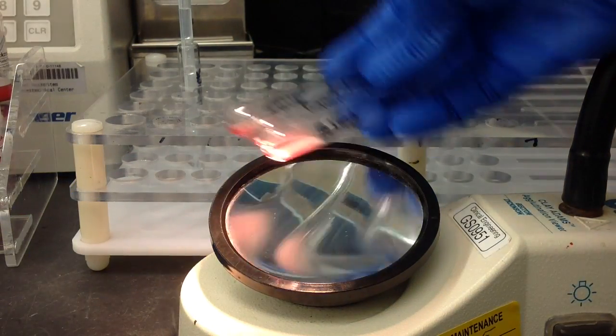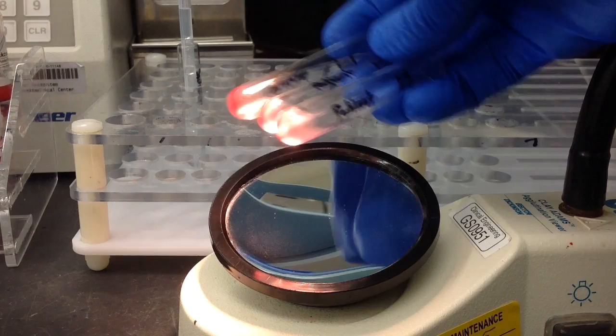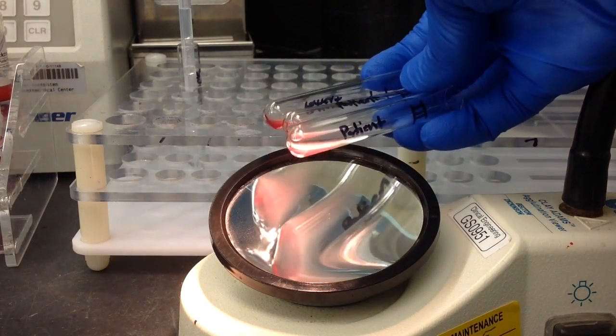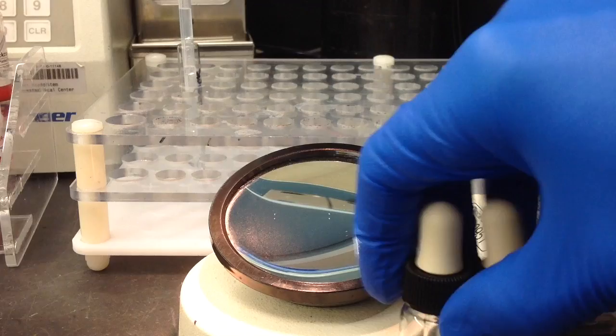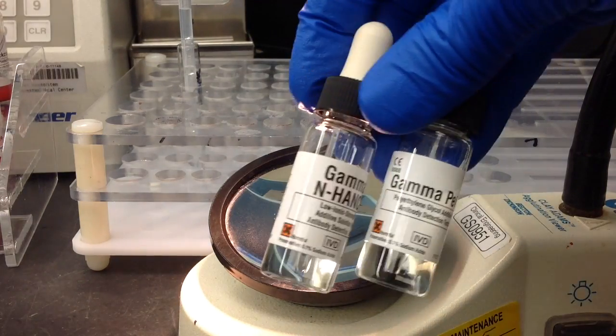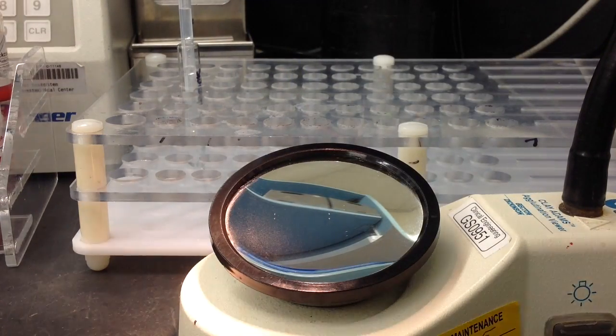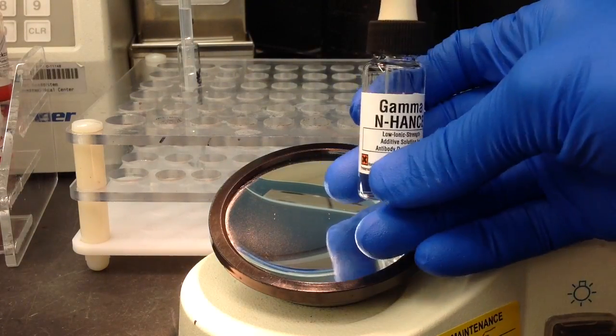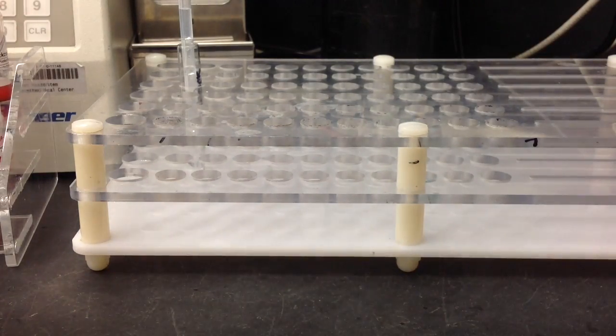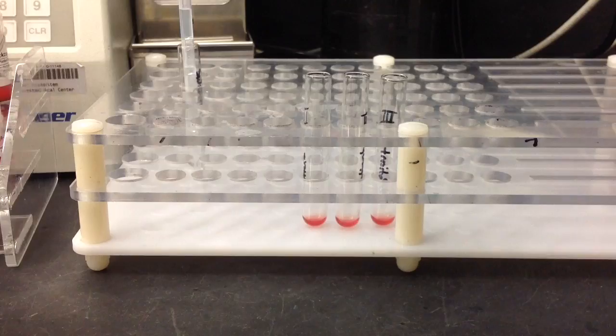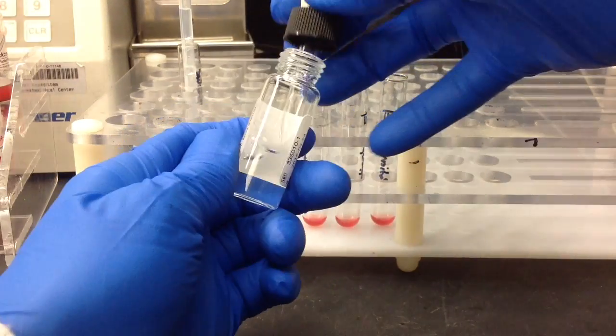I'm trying to resuspend the cell button and it's looking pretty negative. So the next step would be to grab your enhancer. Like I said, for this I'm going to be using LISS, which is low ionic strength solution. You want to add two drops of this to each one of your tubes, and this will...